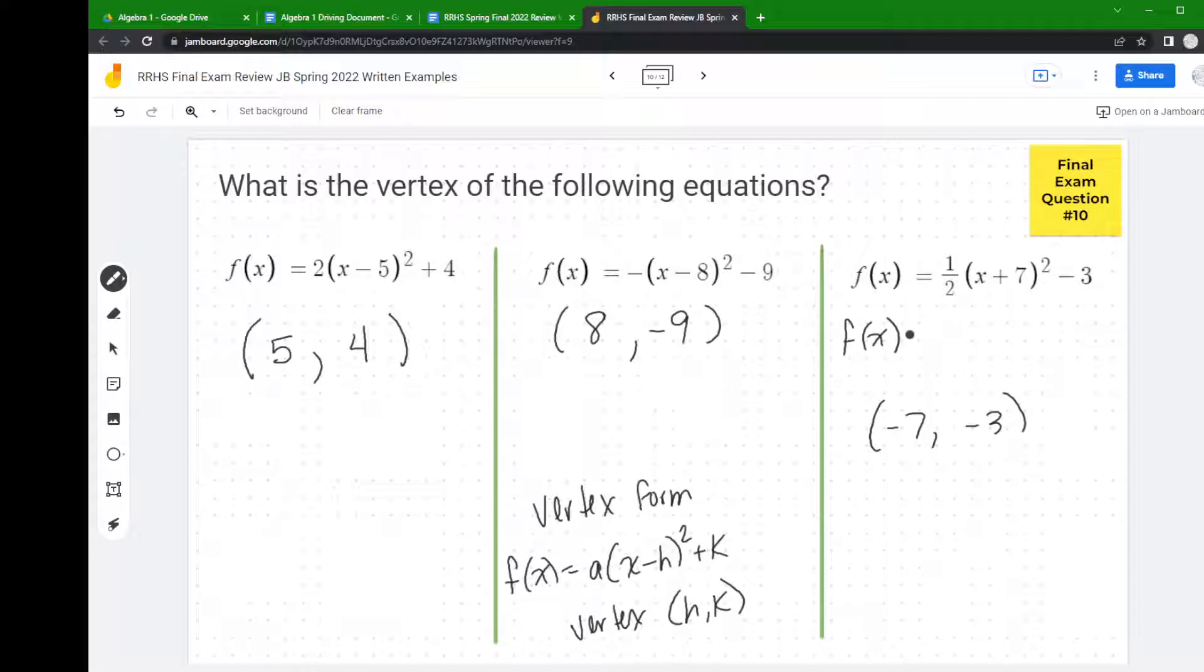So here I rewrote the equation and I turned it into subtraction. There's your negative 7 right there, and that's why it turns to negative 7 in the equation.